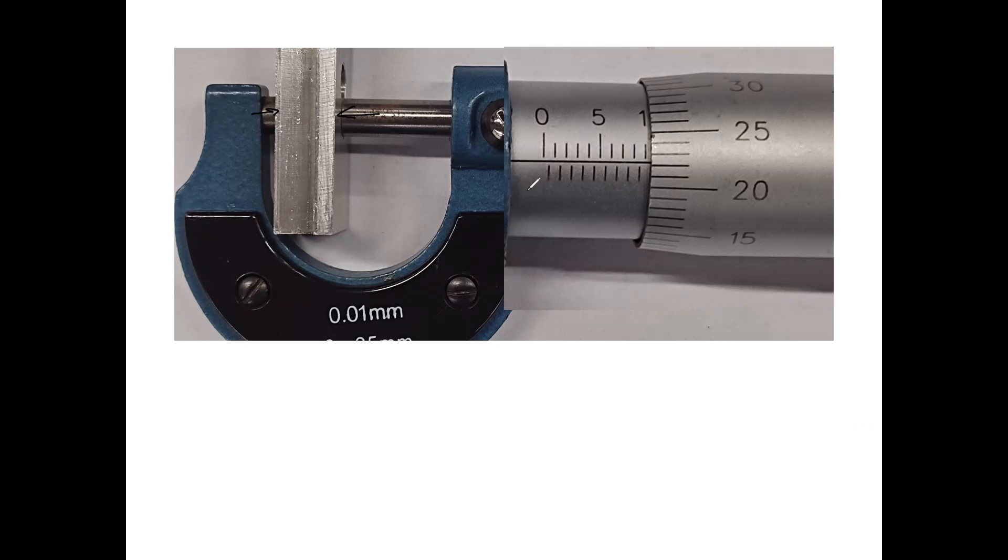Again, you have two scales. One is the main scale, which is here on this linear one, and you have a circular gauge, which is on this rotating dial.